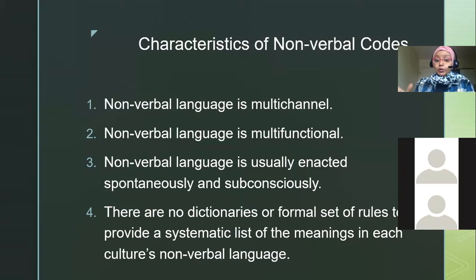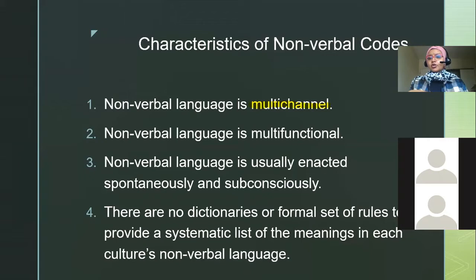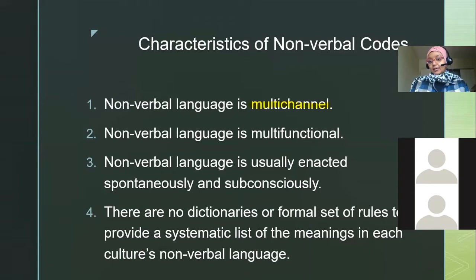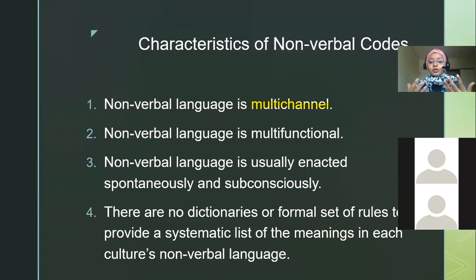What are some characteristics of nonverbal codes? The biggest one is that they are multi-channel — most of the time we use more than one channel at the same time. Coming from a high-context culture, I could be using my facial expressions and my hands simultaneously. Multi-channel means you're using more than one channel when sending a message — your voice tone and your hands, or your facial expressions and your voice tone and your hands.